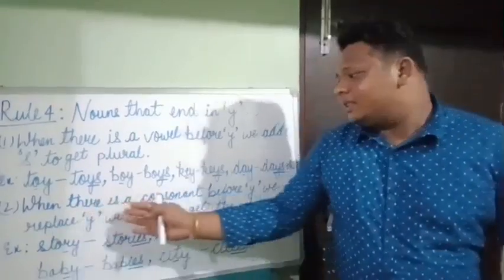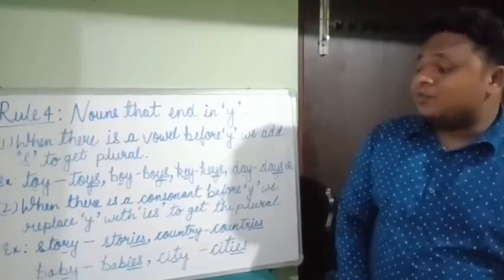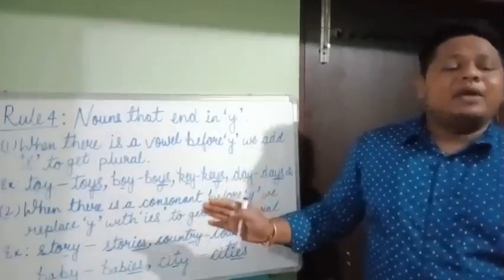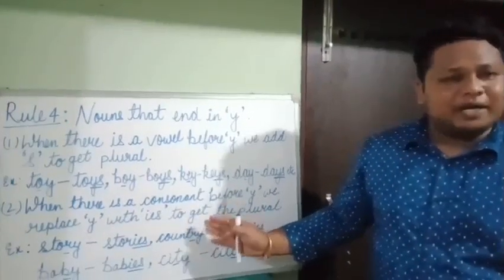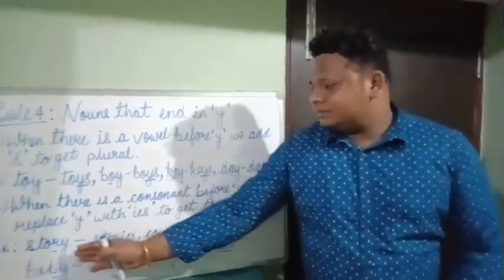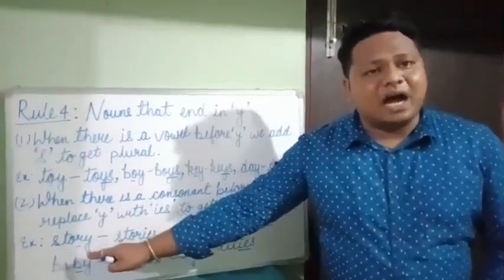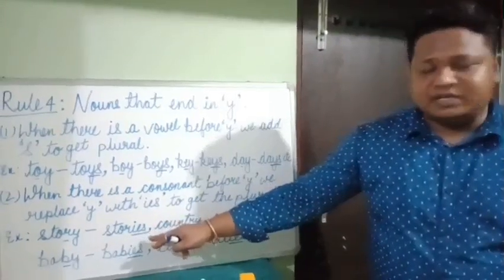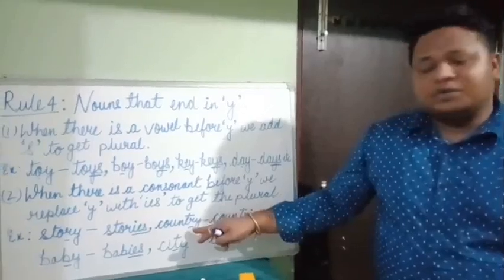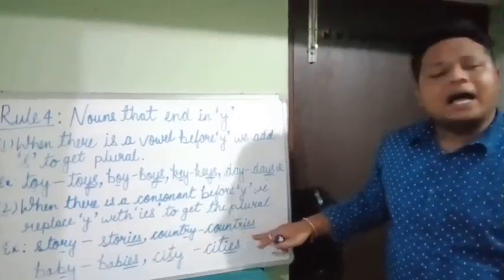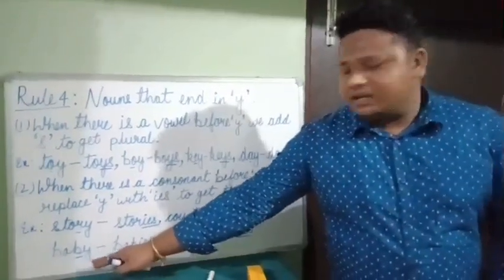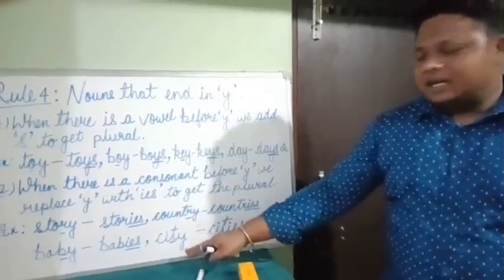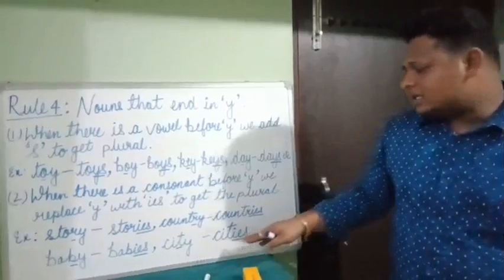The second condition: when there is a consonant before Y, we replace Y with IES to get the plural form. For example, story — consonant R before Y, so we replace Y with IES: stories. Country — consonant R, so countries. Baby — consonant B, so babies. City — consonant T, so cities.